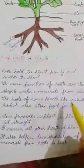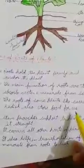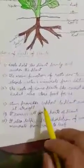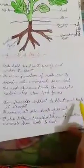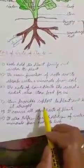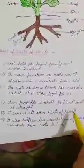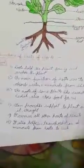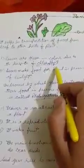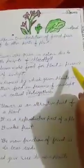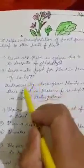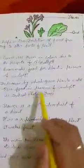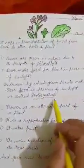Roots of some plants like carrot and radish also store food for us. Next, the stem: stem keeps the plant straight and upright, carries all other parts of the plant, and helps in the transportation of water and minerals from roots to leaves. Next, the leaf: leaves are green in color due to the presence of chlorophyll, and leaves make food for the plant in the presence of sunlight. The process by which green plants make their food in the presence of sunlight is called photosynthesis.